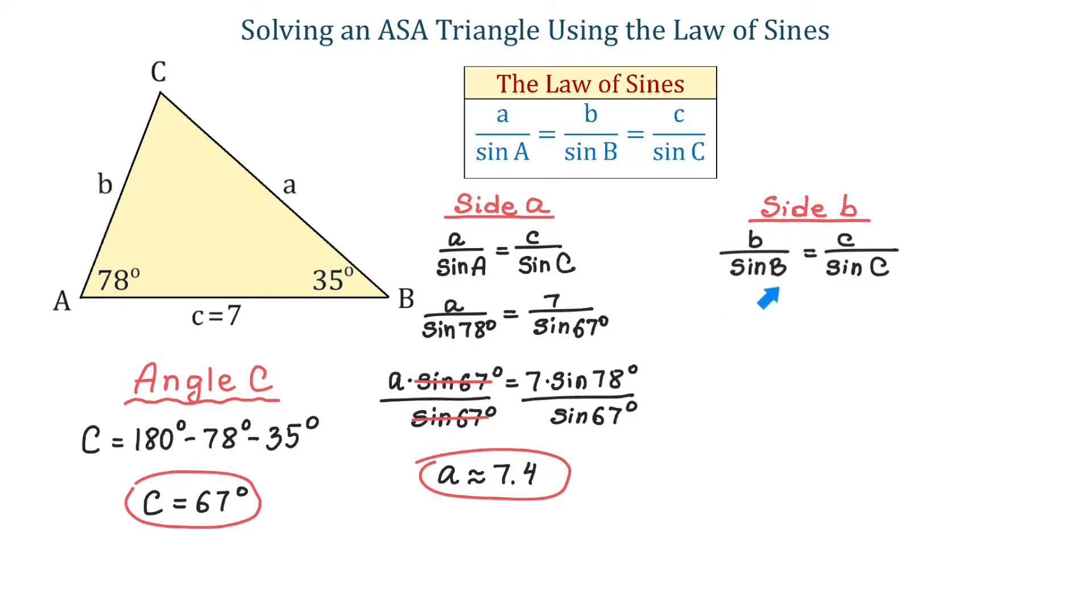Then, we will replace angle B with 35 degrees, side C with 7, and angle C with 67 degrees. So, we will have B over sine of 35 degrees equals 7 over sine of 67 degrees.